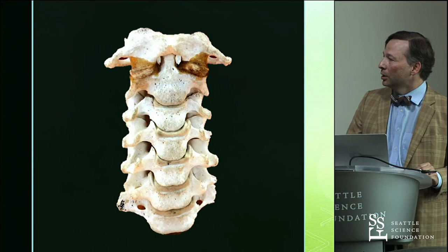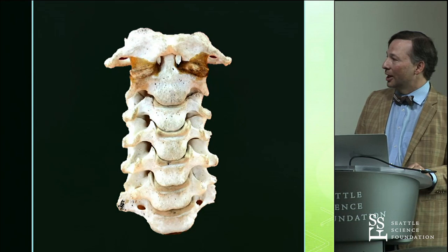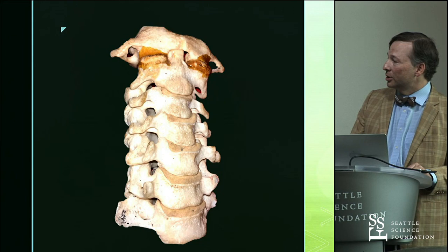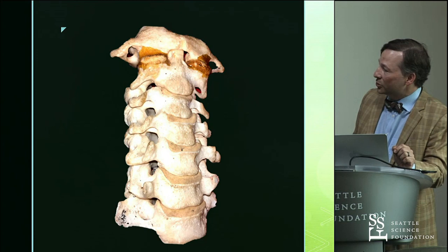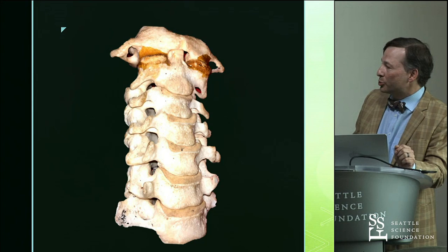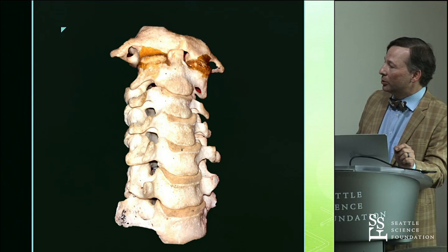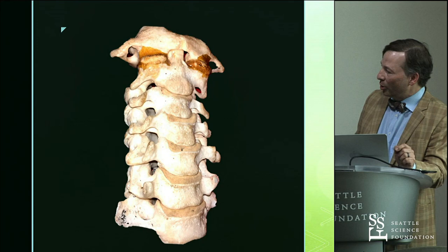The bodies of the cervical vertebrae are fairly flat, rectangular in shape, with left-to-right length greater than the AP width. Rotating a bit, we can see the wide-open intervertebral foramina and their relationship to the uncinate processes. From C3 to C7, the transverse processes are modified in the cervical region — we have both an anterior and a posterior tubercle, connected by the osteotransverse bar, which the spinal nerve sits on. As you get down to C7, the vertebral prominence, it does not really have an anterior tubercle.